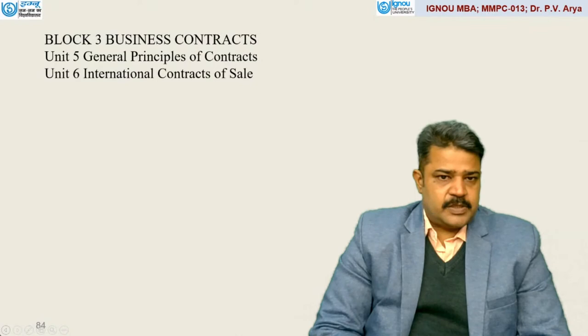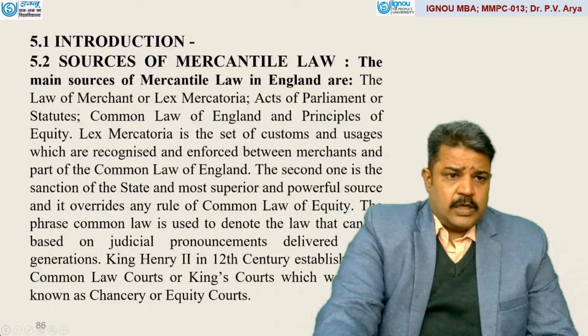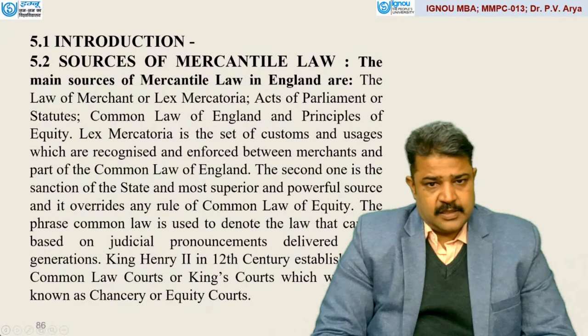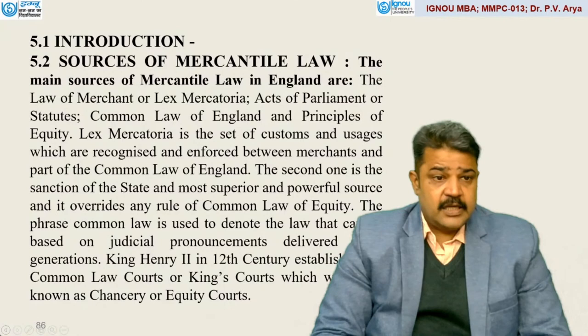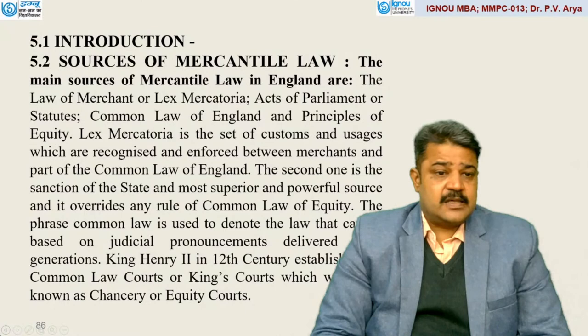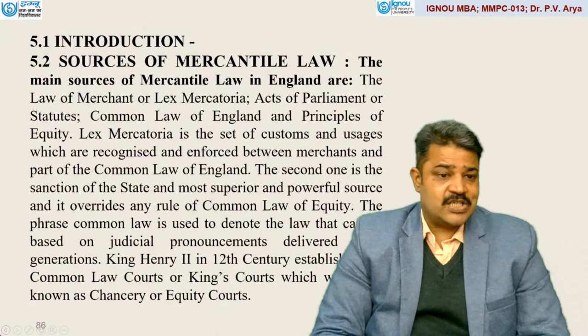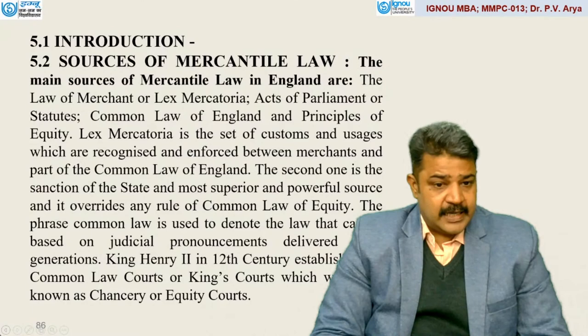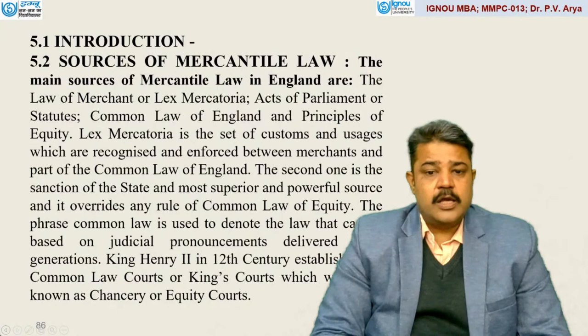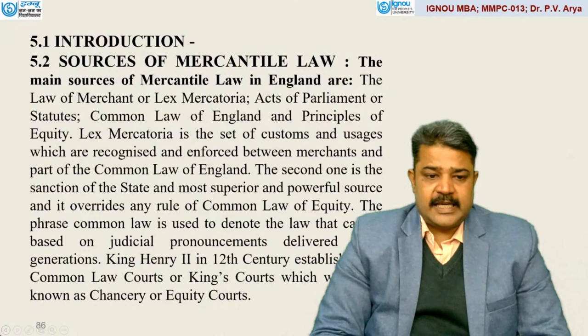After this, let's move to Block 3, which involves two units: general principles of contracts and international contracts of sale. General principles of contracts are basically based on the law of mercantile of England — the law of mercantile is a set of customs and uses which are recognized and enforced between merchants, and part of common law of England. The second source is the sanction of the state — the most superior and powerful source, which can override any rule of common law or equity. The phrase common law is used to denote the law based on judicial pronouncements delivered from generations. King Henry II in the 12th century established the common law courts, or king's courts, which were also known as chancery or equity courts.